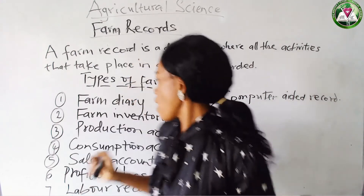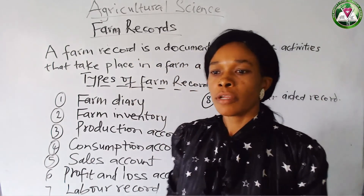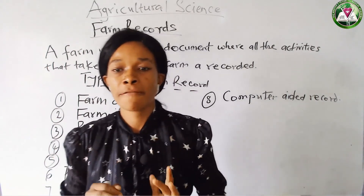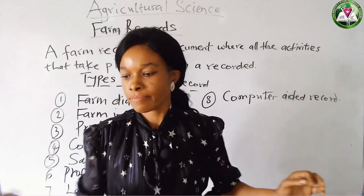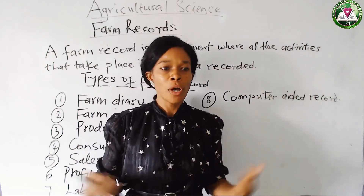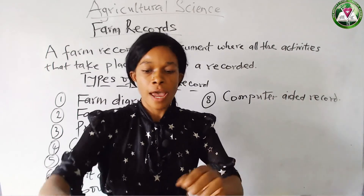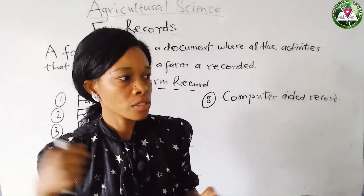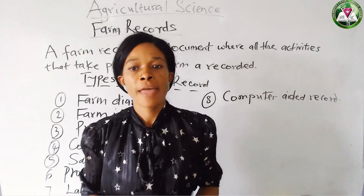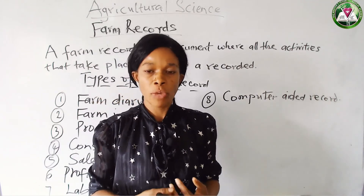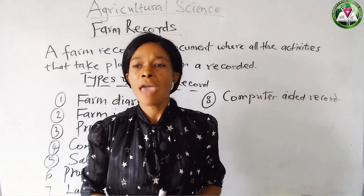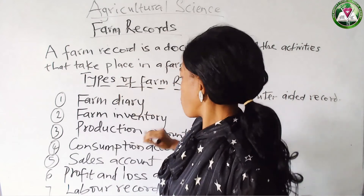The third type is Production Accounts. The production account has to do with everything that is produced in the farm within a specified period of time. How many eggs, how many animals, how many were birthed, how many babies or kids, how many sales — everything produced comes under production accounts.